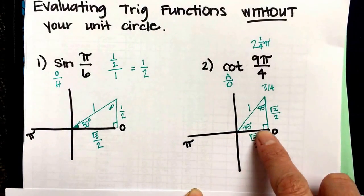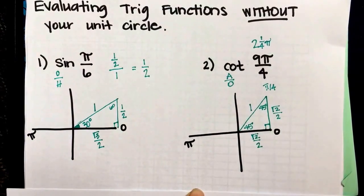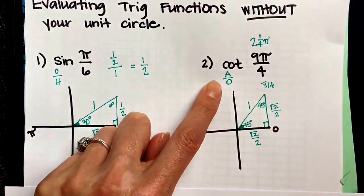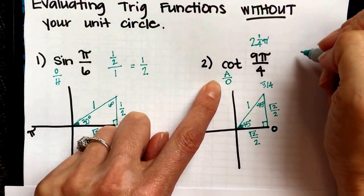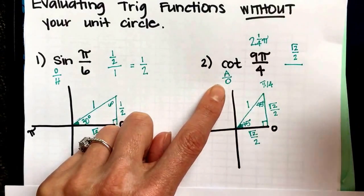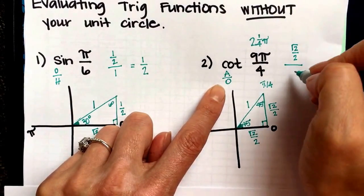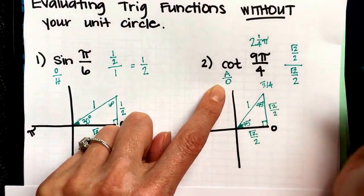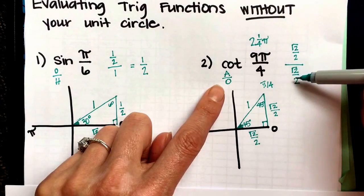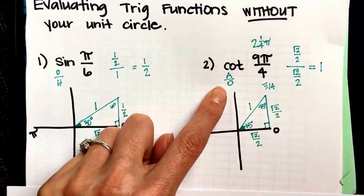This side is positive because it goes to the right. This side is positive because it goes up. So they're both positive. Cotangent is the adjacent side. We use the angle from the origin. Adjacent to that is radical 2 over 2, divided by the opposite side. Opposite the angle at the origin is radical 2 over 2. And if I divide root 2 over 2 by root 2 over 2, I'm dividing something by itself, then that is just 1.